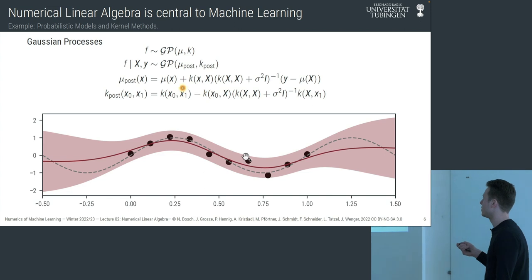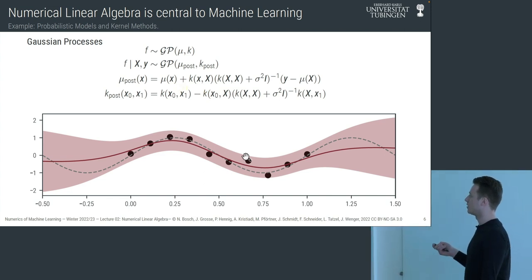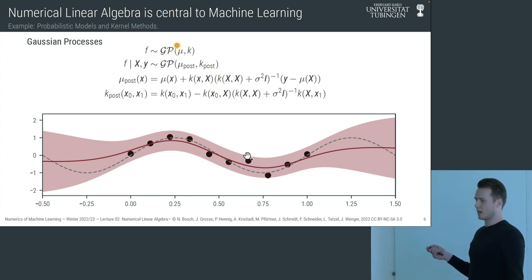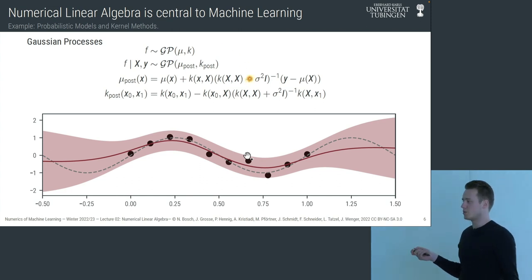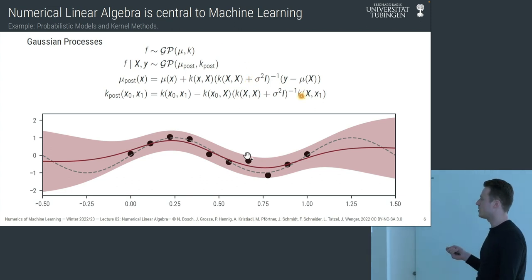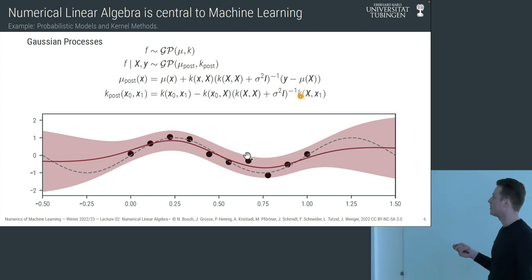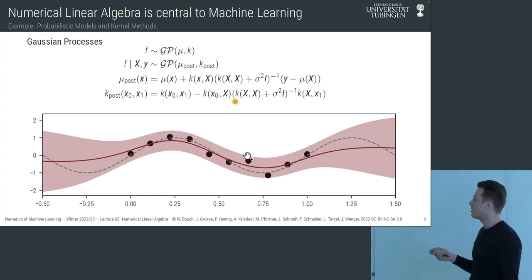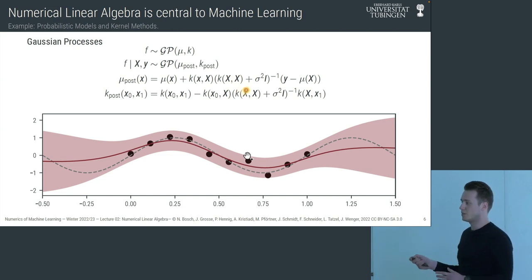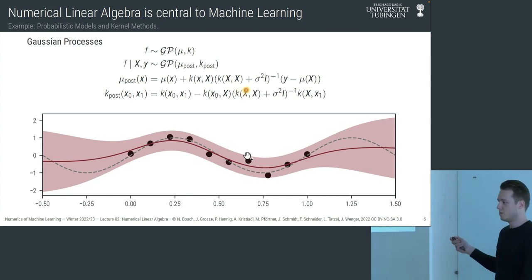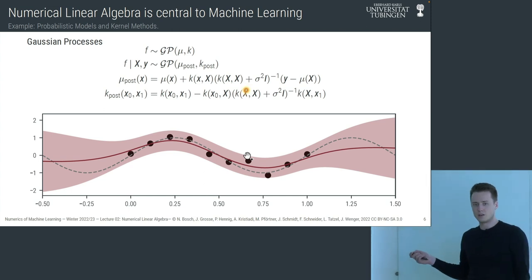A similar version of these equations applies to a larger class of models called kernel methods or kernel machines. The most direct contender in statistical machine learning would be ridge regression. Even though we talk about Gaussian processes here, these techniques apply to that larger class of models.